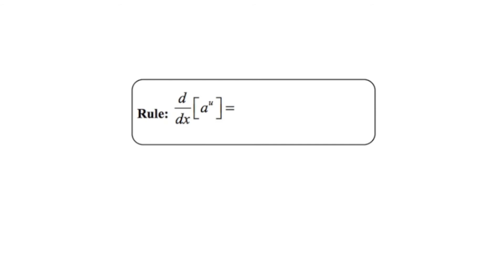On this slide, I'd like to reiterate the rule for taking the derivative of an exponential function when the base is not e and the power is generalized as u. In this case, we're going to take the derivative of the exponent, multiply by the natural log of the base, and then restate the problem.